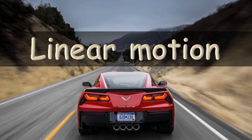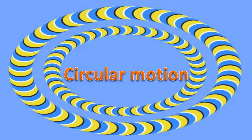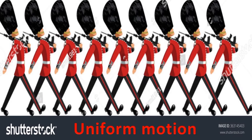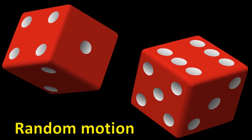The types of motion are: linear motion, circular motion, oscillatory motion, uniform motion, and random motion.